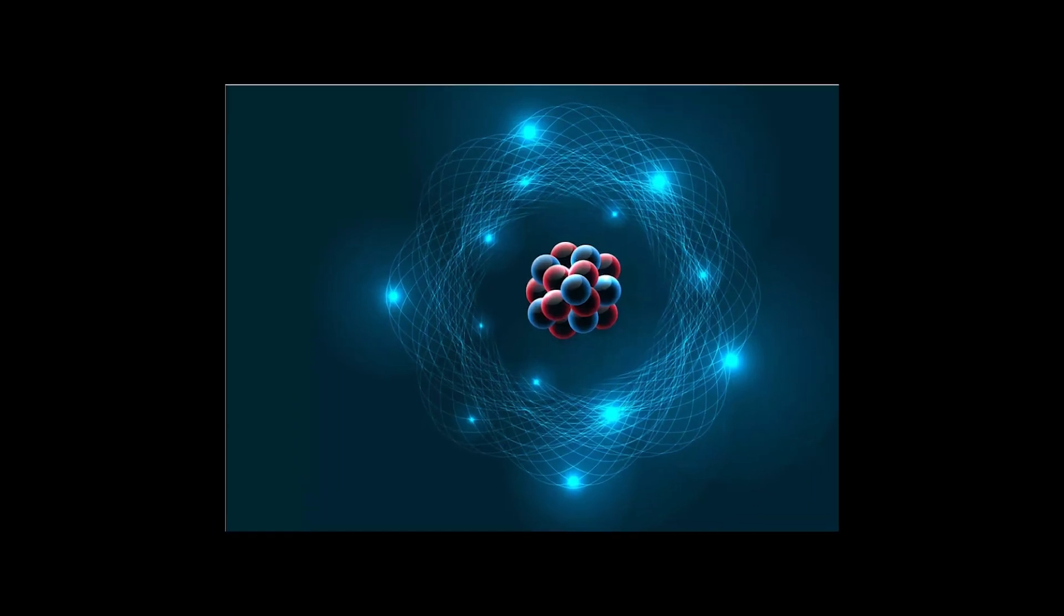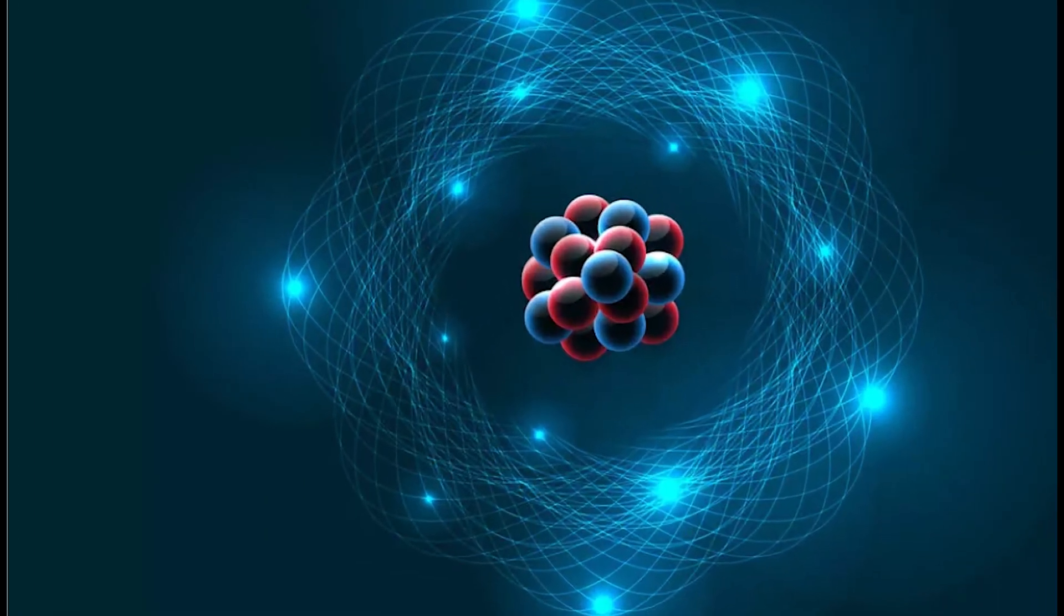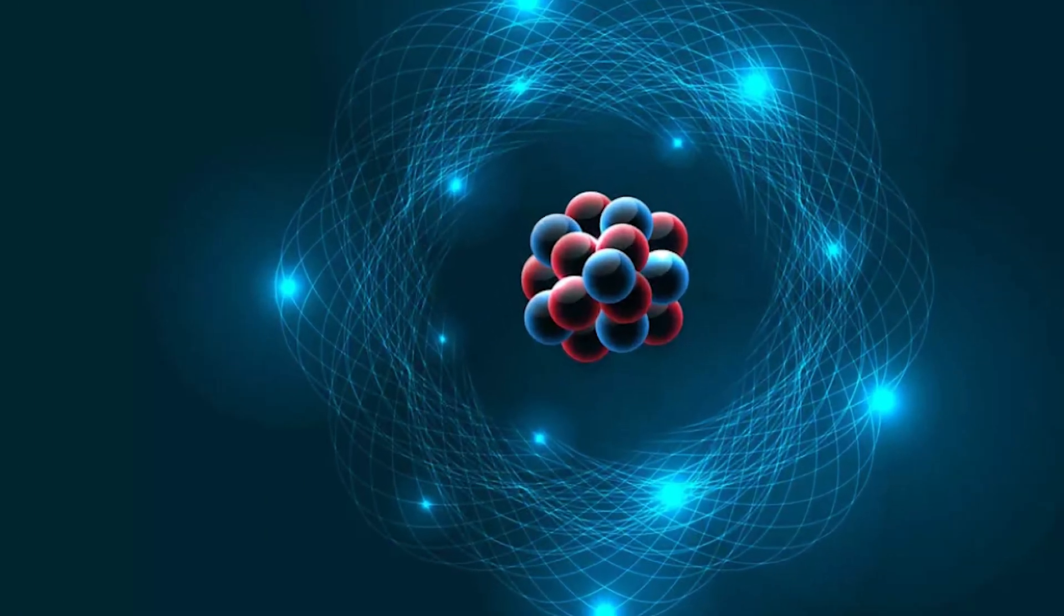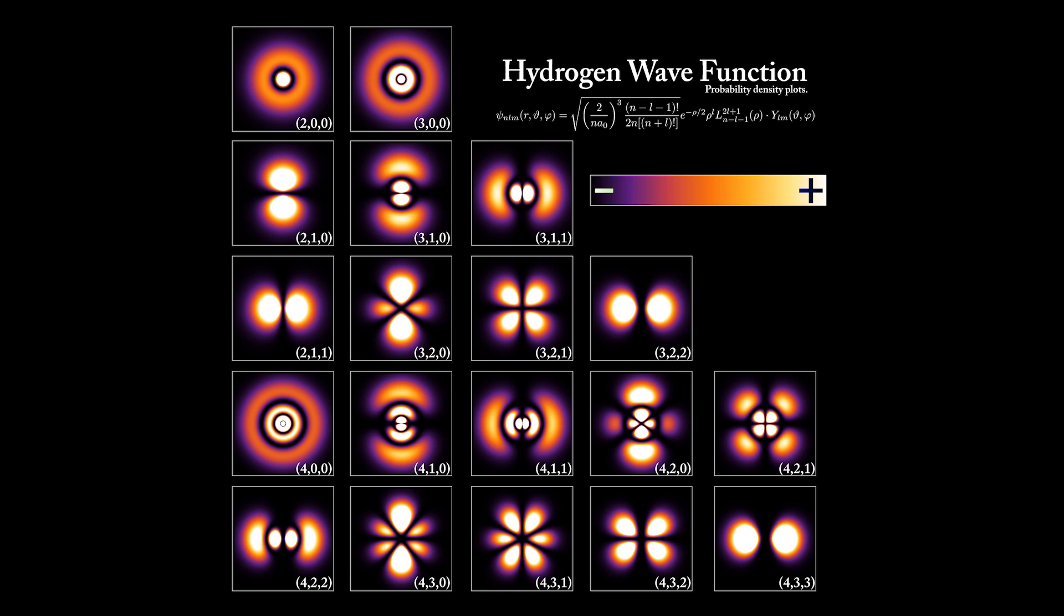And after that, in 1926, Erwin Schrödinger developed the wave mechanical model of the atom, which used quantum mechanics to describe the behavior of electrons as waves rather than particles and represented their position as a probability distribution.